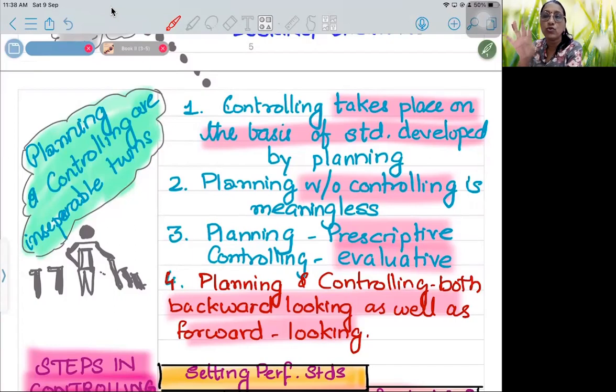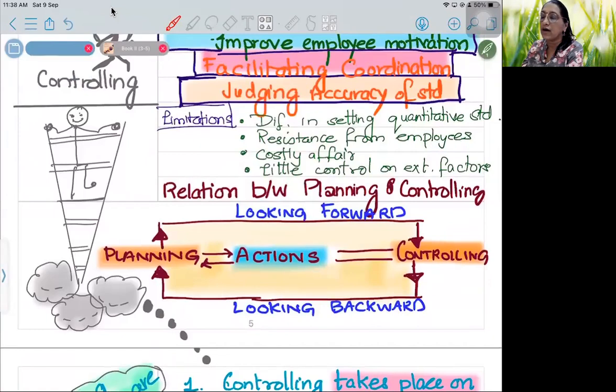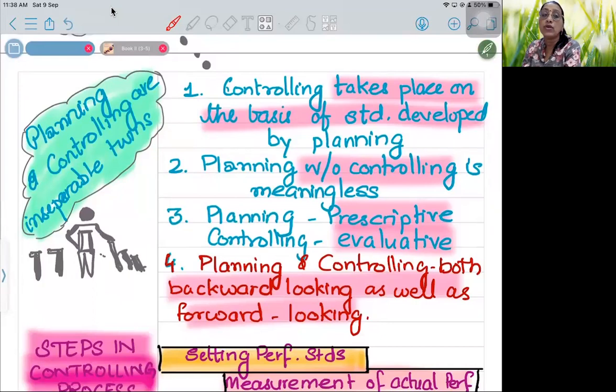So in the next planning, if we want to keep the existing labor, we make it 90 in the next planning. Or if we want hundred, we need two more laborers, so we take more laborers. That means when we do the next planning, it comes on the basis of the controlling. These are the four points which you need to write. And this question also comes like this: both planning and controlling are looking forward and looking backward. Or it also comes like: planning and controlling are inseparable twins. You cannot separate them because planning depends on controlling, and controlling - whatever happens - according to that you do planning. Controlling takes place on the basis of the standard that we develop by planning.